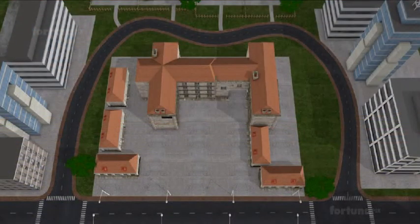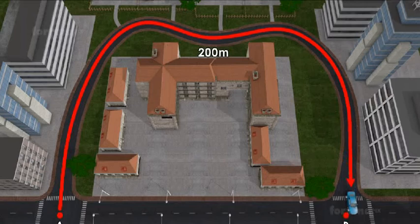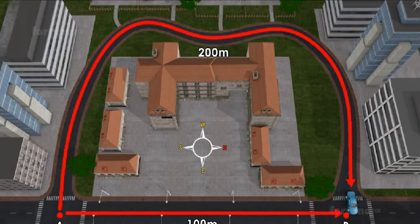Let's consider the car travelling from point A on a longer curved path of 200 meters and reaching point B. In this case, the displacement is still the same — 100 meters north from A to B. But the distance, which is the length of the road that our car travelled from A to B, had become 200 meters.